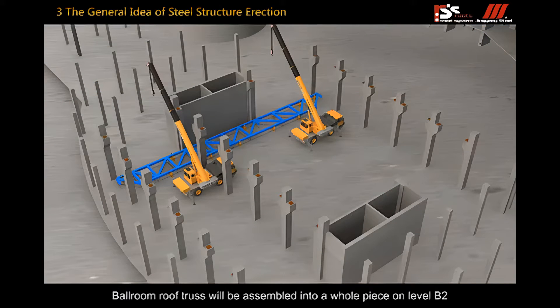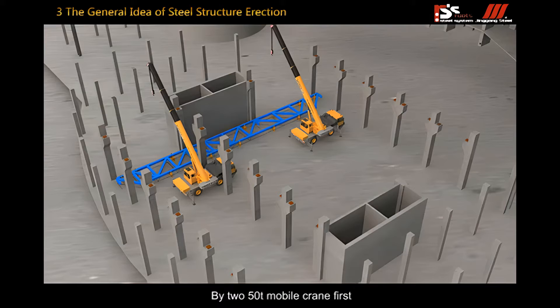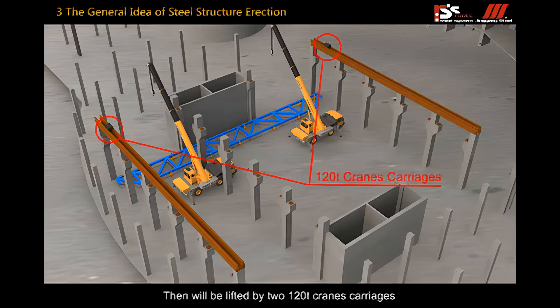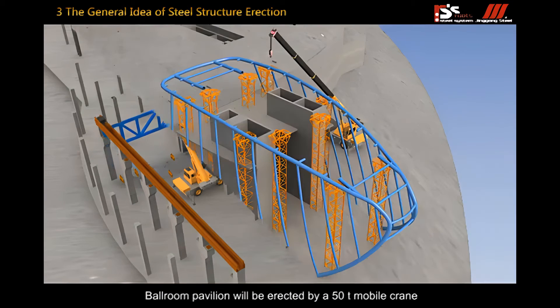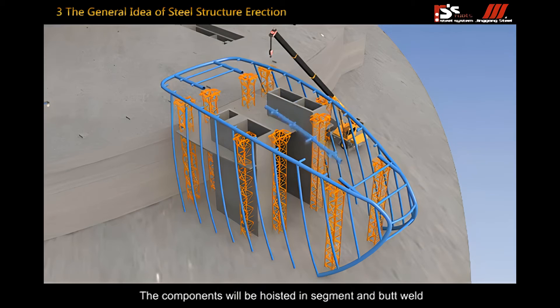Ballroom roof truss will be assembled into a whole piece on level B2 by 250 ton mobile cranes first and then will be lifted by two 120 ton crane carriages which are set on rail lines on concrete columns. Ballroom pavilion will be erected by 250 ton mobile cranes. The components will be hoisted in segments and butt welded.